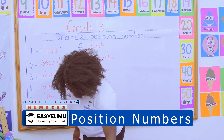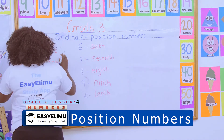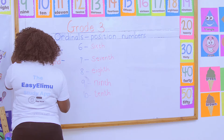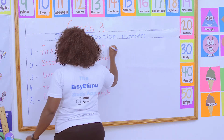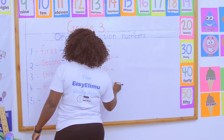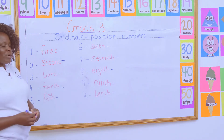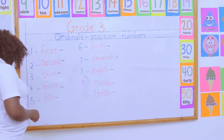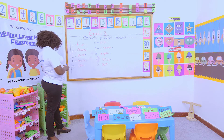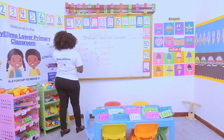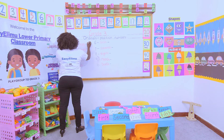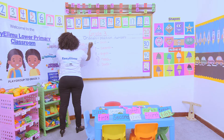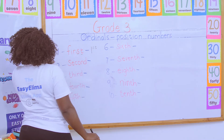What if I'm told to write the symbol? Can you indicate for us the symbol for this ordinal? Who can remind me what we did when we were doing the ordinal symbols for numbers one to five? Teacher, we used to take the number. Very good. The number here is one and the last two letters, which is 'st', to give us 1st.